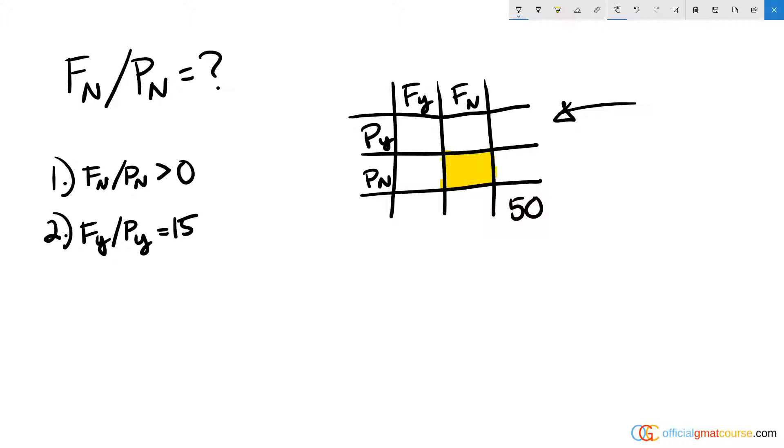So we are being asked how many people in a group of 50 own neither a fax machine nor a laser printer. So F no, P no, which would be this yellow box here in our Venn diagram grid.